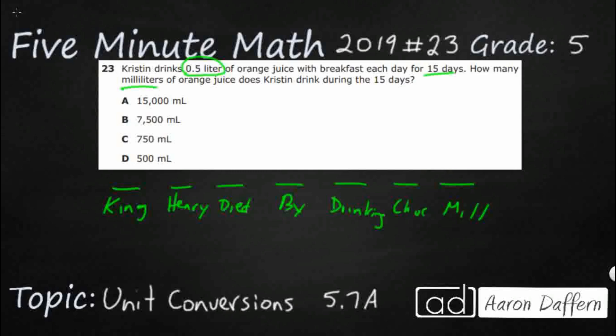What does that do for us? It helps us remember all of the prefixes, because our metric system is based on tens — it's a base-10 system. This B right here is where we start; it's our base unit. In this case it's going to be liters. If we're dealing with mass it could be grams, or dealing with length it could be meters, but we're dealing with liters right here.